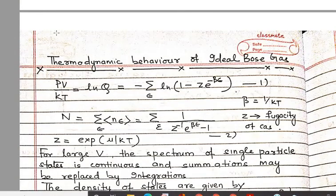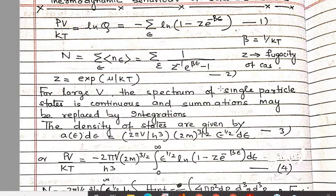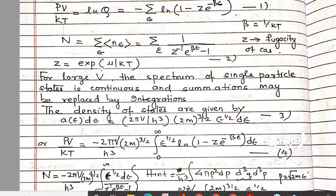Moving forward, we discuss the thermodynamic behavior of an ideal Bose system. We know PV/KT = ln Q, where Q is the grand canonical partition function, which can be written as the sum of ln(1 − z·e^(−βε)), where β = 1/KT and z is the fugacity of the gas. The occupation number is given by 1/(z⁻¹·e^(βε) − 1) for a Bose system, and z = exp(μ/KT) where μ is the chemical potential. For large V, the spectrum of single-particle energies is continuous, so summation may be replaced by integration.